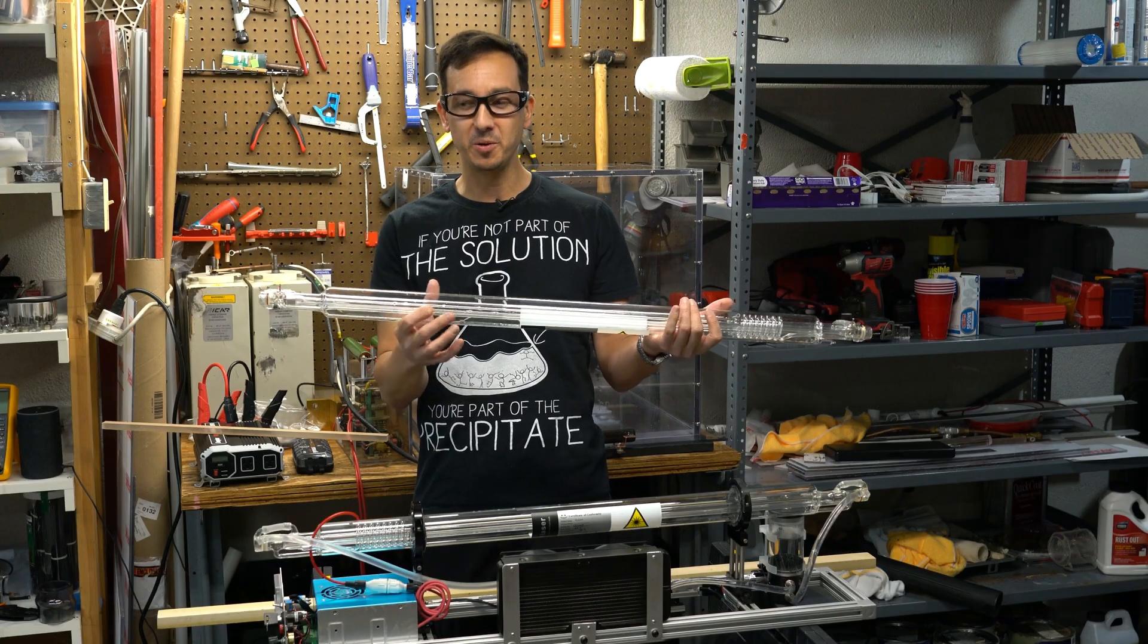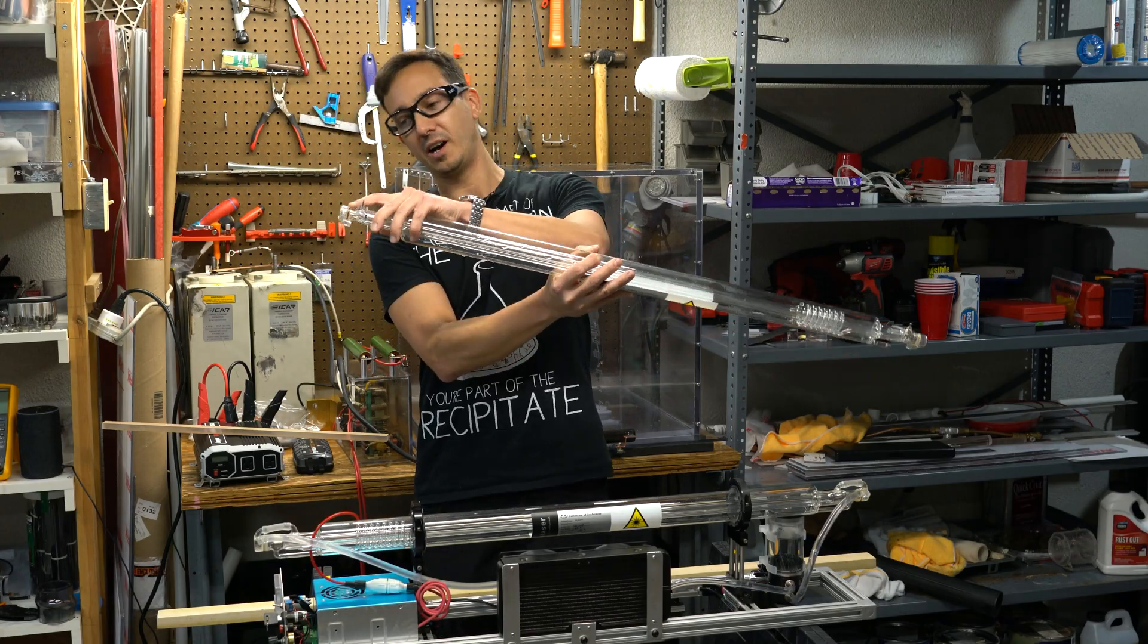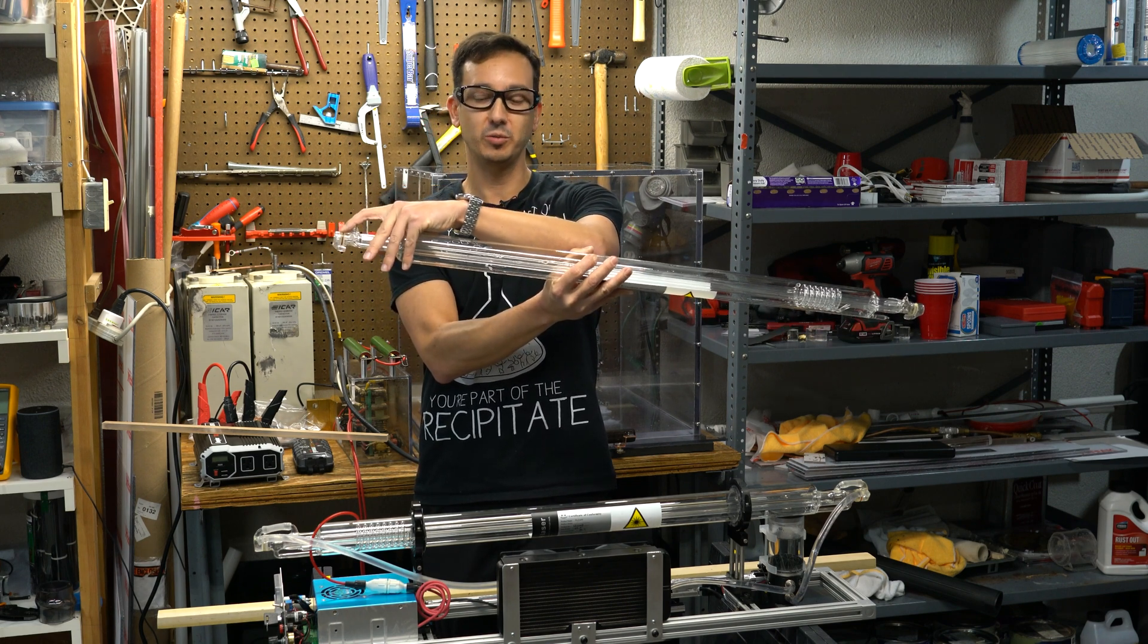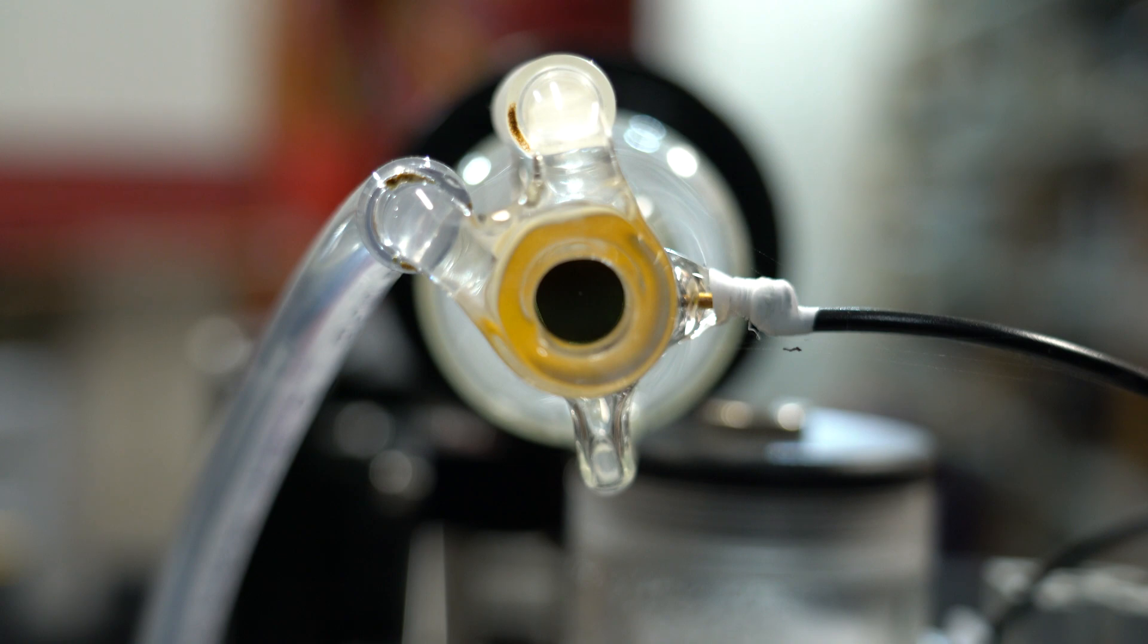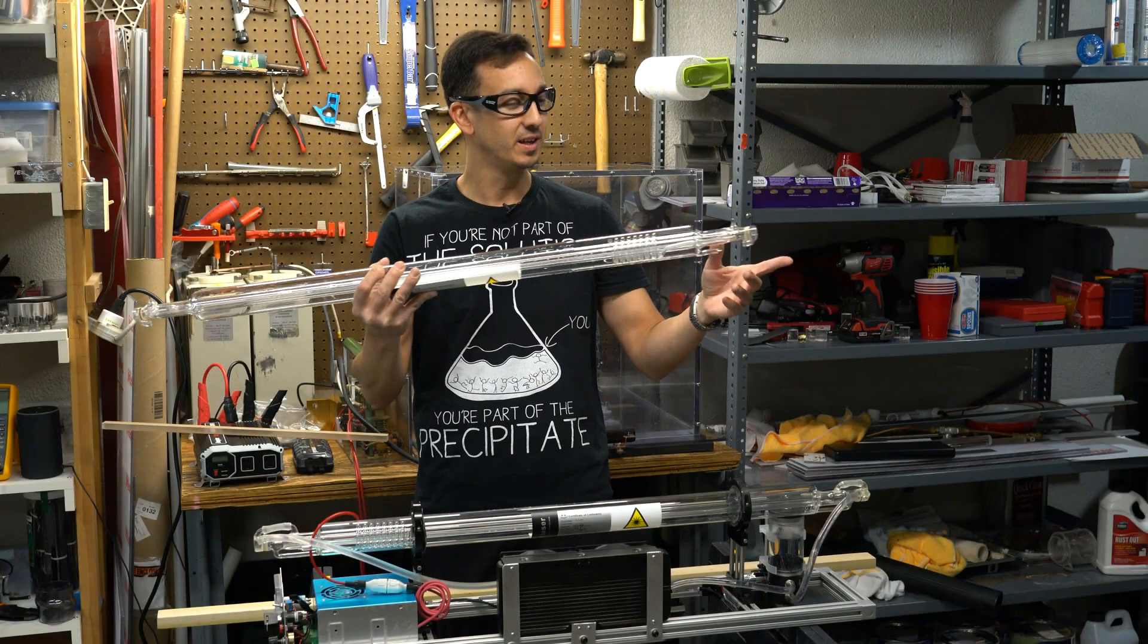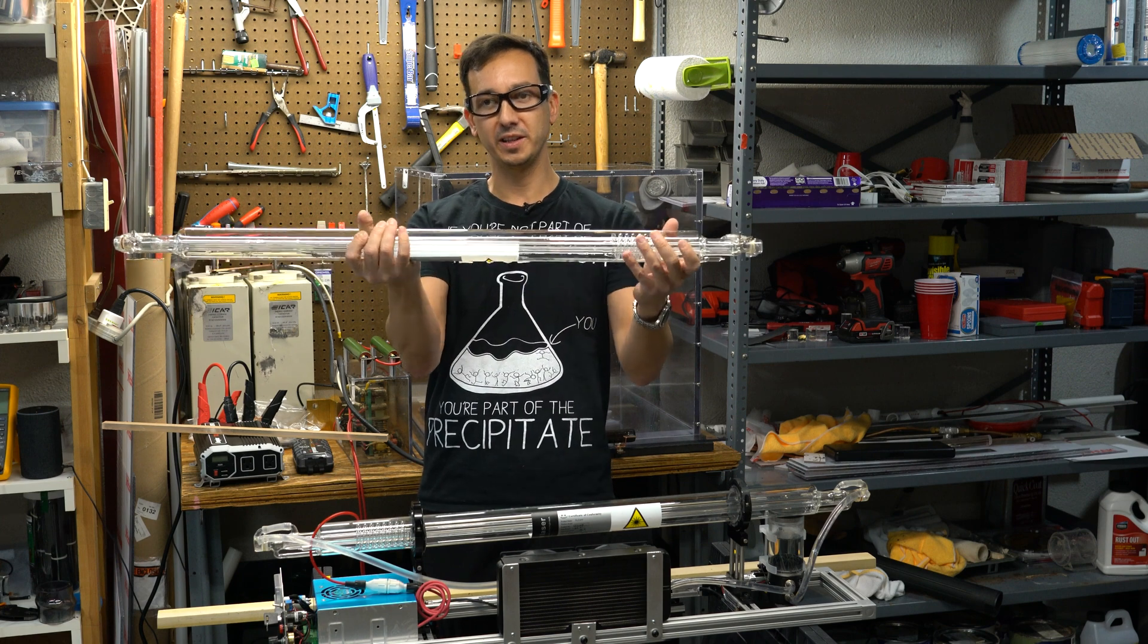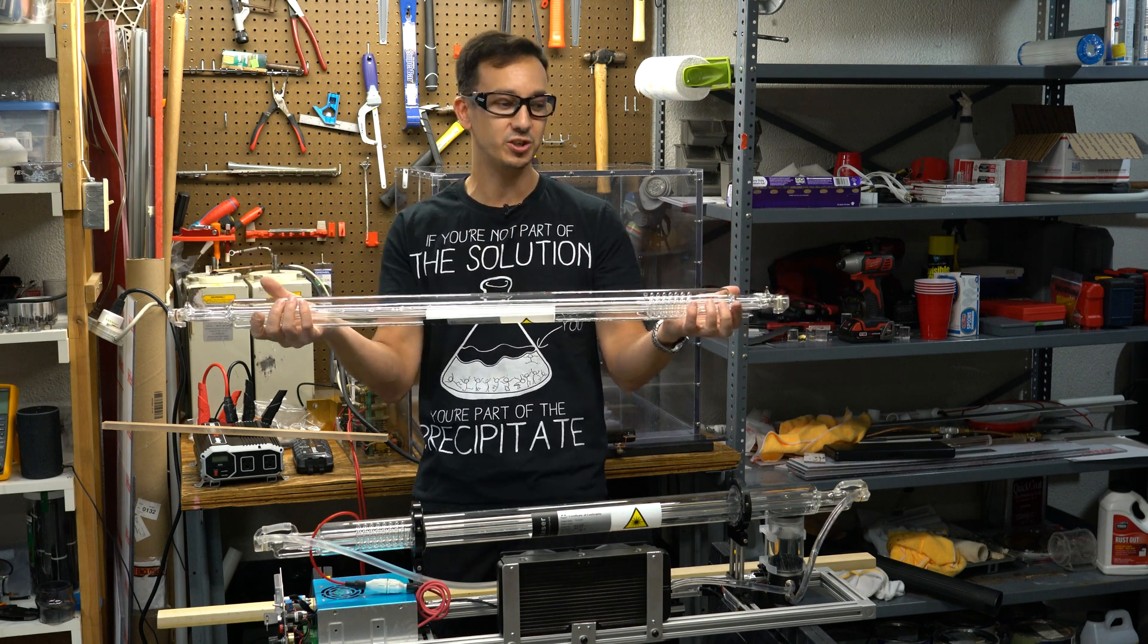The way it works is very simple. Essentially, there is a 98% transmittance mirror in this end, which means that most of the light bounces back, but not all of it does. There's a gold mirror at the other end. Everything is evacuated and then backfilled with a mixture of carbon dioxide and nitrogen.